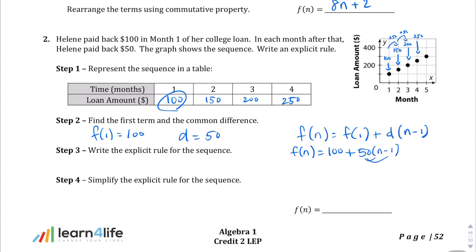Let's distribute that 50. We get 100 plus 50n minus 50. We have like terms here that we can combine. And the explicit rule that we end up with is 50n plus 50.